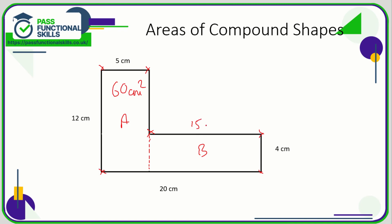And 4 times 15 is 60 as well. That's quite coincidental that these are the same. So the area of this shape is 60 plus 60, so 120 square centimeters. So with compound shapes, break it down into more manageable and easier shapes.